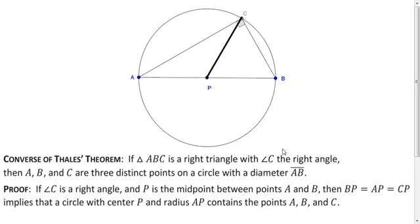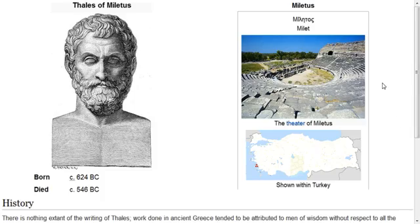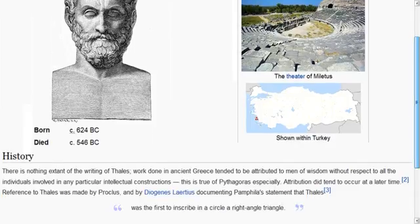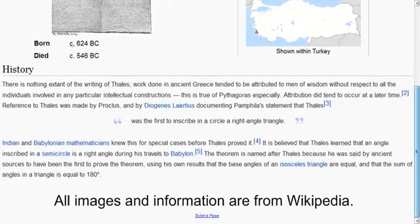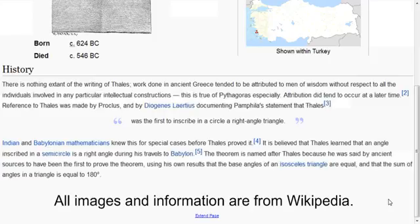So who was Thales? Well, Thales was an ancient mathematician from the city of Miletus, which is in modern-day Turkey. And like Pythagoras, he's credited with a theorem that it's pretty much known that he wasn't the first one to prove, but he's the one who was historically credited with it. So if you want to learn more about Thales and his theorem, you can search him on Wikipedia.